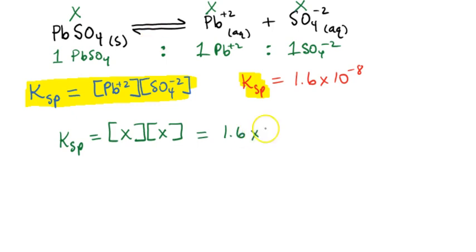And now this value just becomes equal to Ksp, which is 1.6 times 10 to the -8. So if we simplify this, we have 1.6 times 10 to the -8 equals X times X, which is X squared. And now we can solve for X. Just take the square root of both sides.